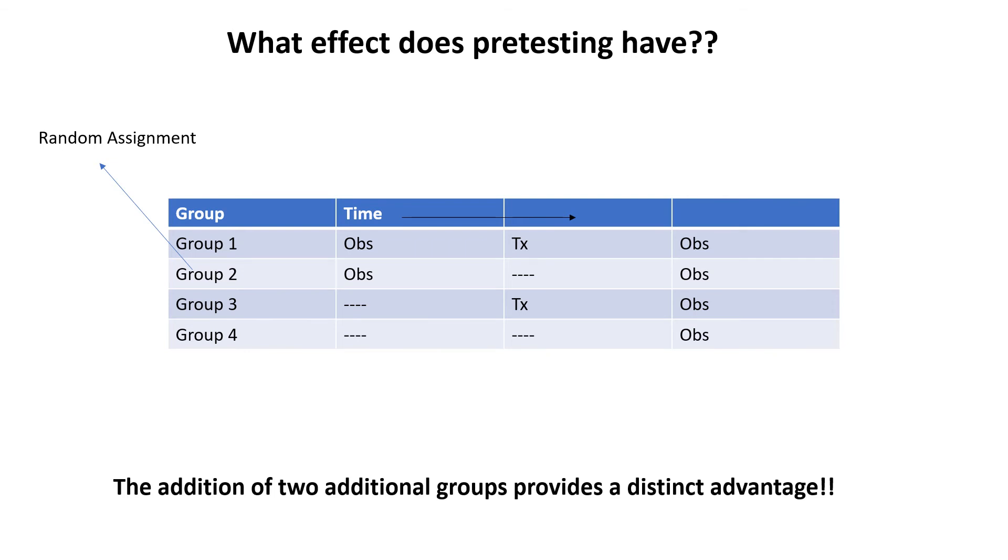If the researcher finds that in the final observation, groups three and four differ in much the same way that groups one and two do, then the researcher can more easily generalize his or her findings to situations in which no pre-test has been given. So in other words, the Solomon four-group design enhances the external validity or the generalizability of the research findings.